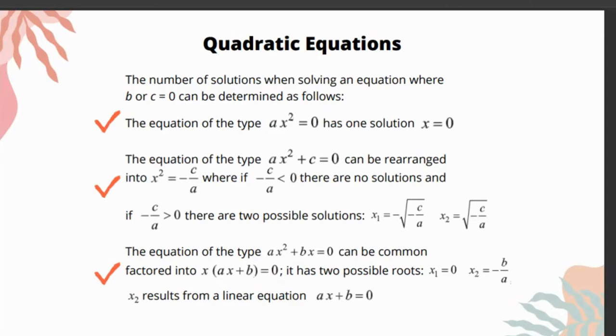If -c/a is greater than 0, for example you plug in the values and it turns out to be a positive number, there are two possible solutions: x₁ is -√(-c/a) and x₂ is equal to +√(-c/a).